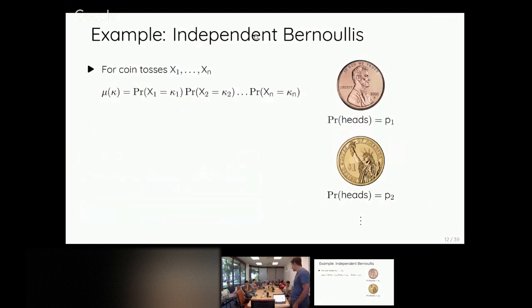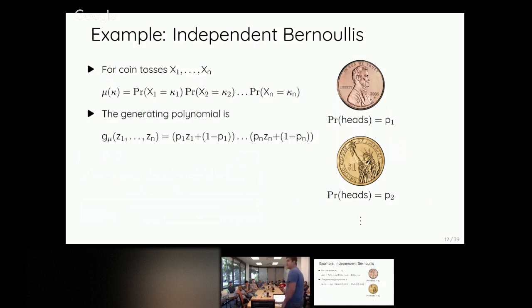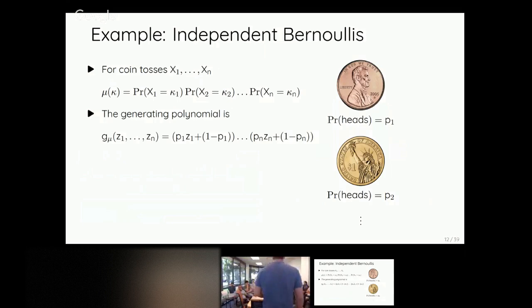Another example: if instead of summing Bernoullis you consider them independently - flip n coins with different biases and record the result as a bit vector in the hypercube - you still get a strongly Rayleigh distribution. The generating polynomial factors as a product of linear terms, one per coin toss, each with a different variable. Plugging in complex numbers with positive imaginary parts, none of these factors become zero, so the polynomial is strongly Rayleigh.